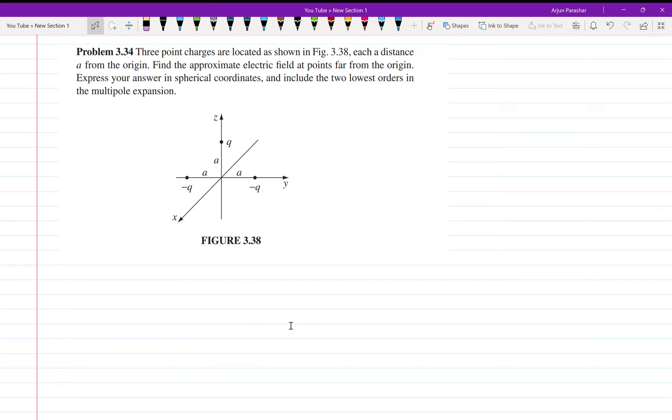Hello everyone, welcome back. Now let us start problem 3.34 on page 160 of Griffith's Electrodynamics. We need to find the approximate electric field at far points from the origin and express our answer in spherical polar coordinates. So we need to find the electric field. First of all, we will be finding the approximate potential.